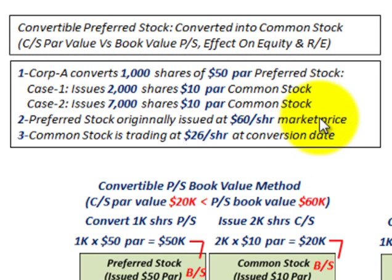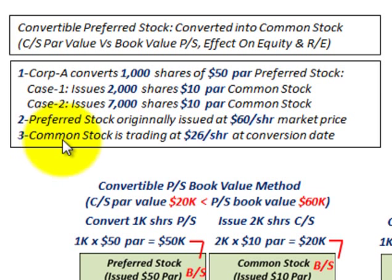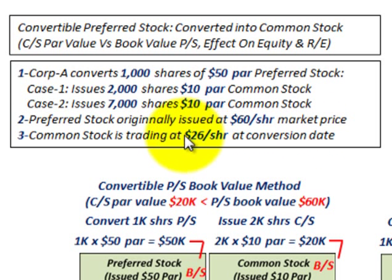That $60 is the market price — what they received for the preferred stock in their accounts when they issued it. The other point is common stock is trading at $26 per share at the conversion date. We're going to be using the book value method here, and the market price at conversion date isn't really going to come into play — I'm just noting it.